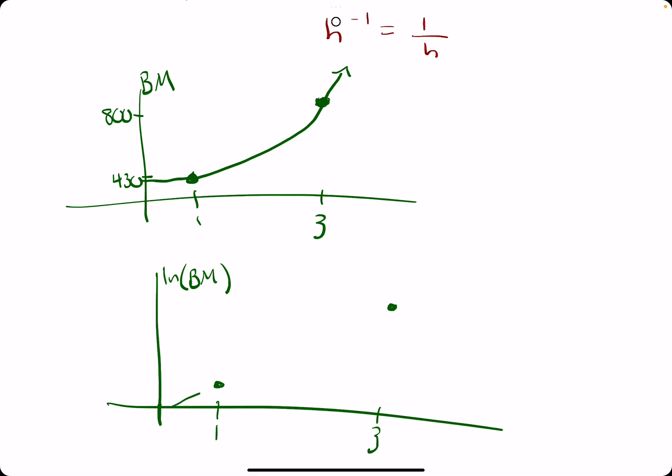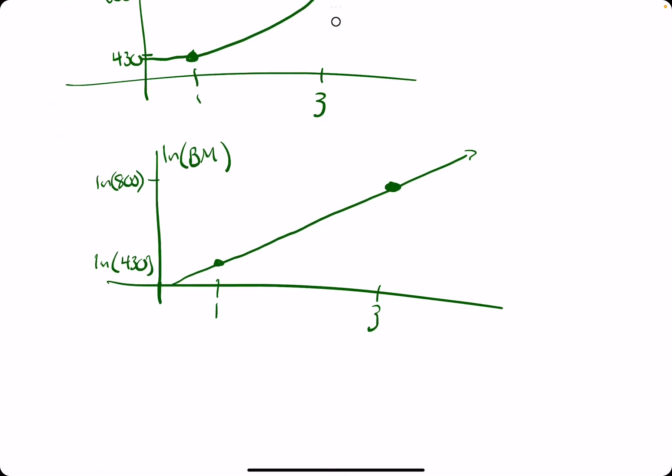That's what allows us to take the slope between those two points because taking the ln converts them into a linear function.